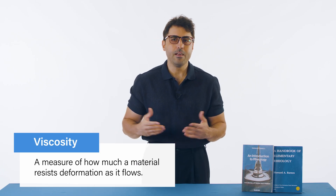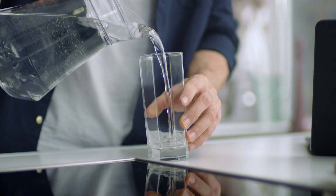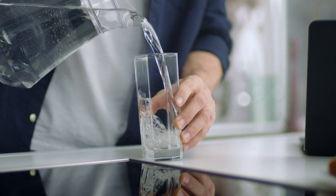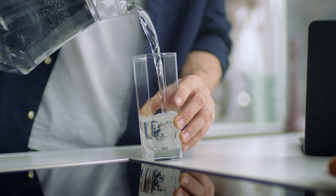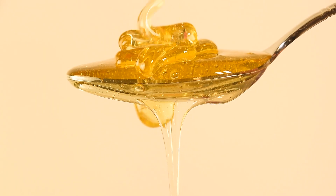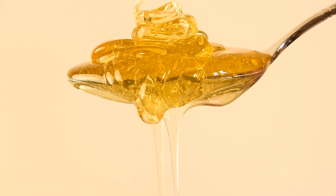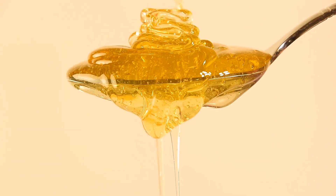Think of it as how thick or runny a fluid is. Water has low viscosity — it flows easily. Honey has high viscosity — it flows slowly.